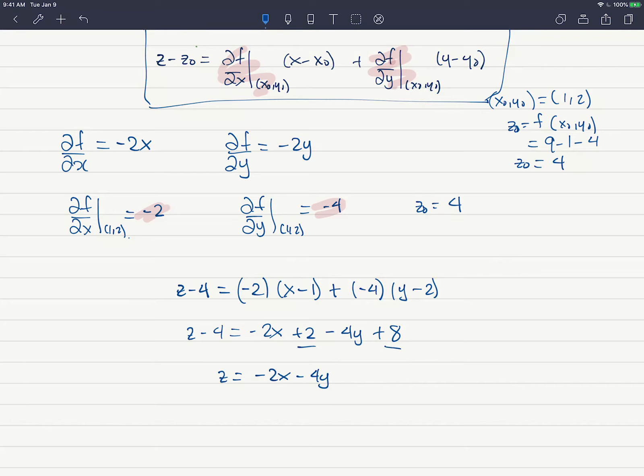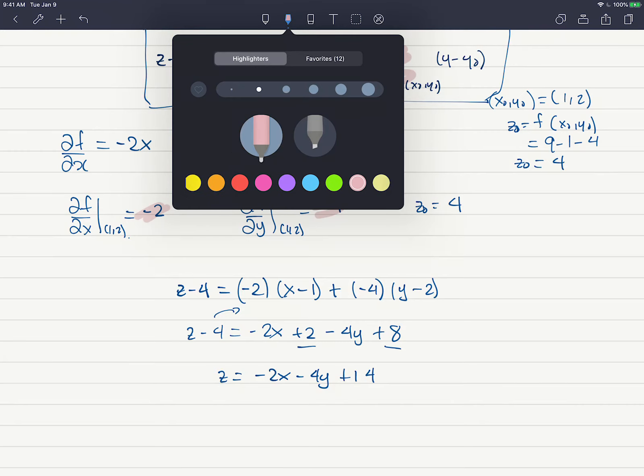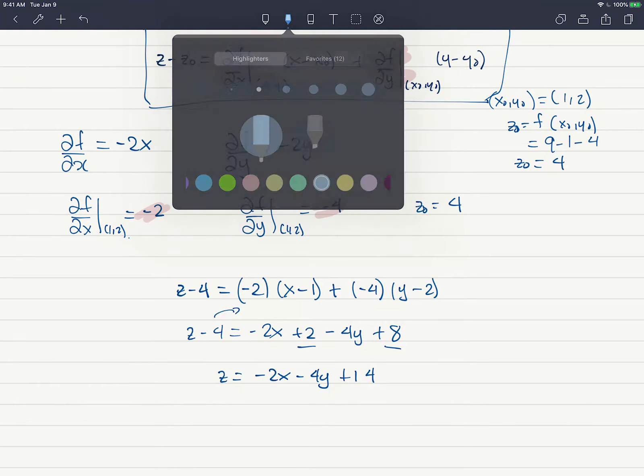So I'm going to have negative 2x minus 4y. Then the 2 and the 8 is 10. And I'm going to be adding the 4. So it's plus 14, correct? So this is my equation of my plane. I'm writing it like this because, like I said, I'm going to plot it in a minute. But we don't need to have it written solved for z usually.